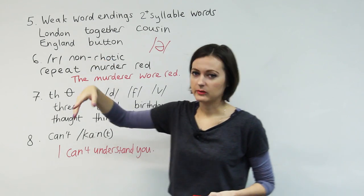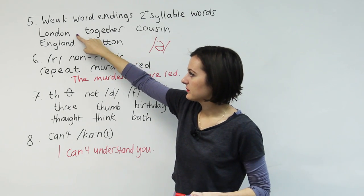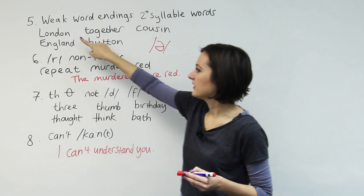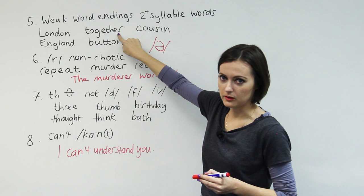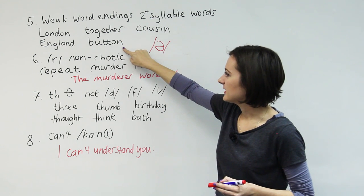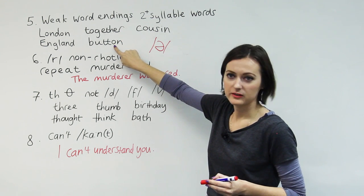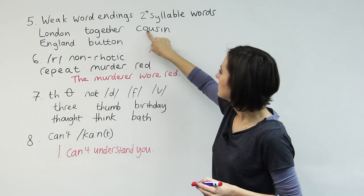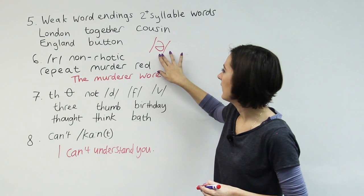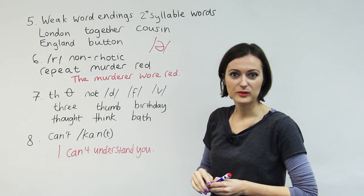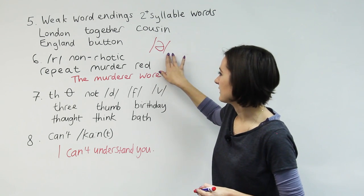So let's say some of the words. London. London. England. Together. Not together. Together. Button. Not baton. Button. Cousin. So that's the schwa and supposedly the most common sound in the English language.